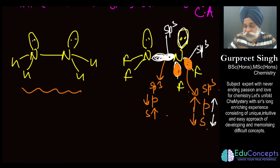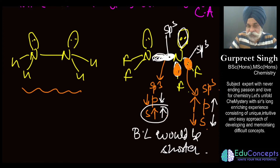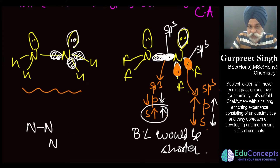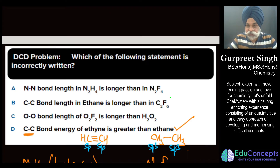The hybrid orbital joining nitrogen to nitrogen has more s-character and less p-character, while the one joining to fluorine has more p-character and less s-character. More s-character means shorter bond length. Therefore, the N–N bond length in N₂H₄ is greater than in N₂F₄ — this is what the Bent Rule predicts, and this is a correct statement.